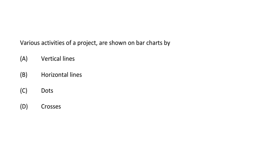Next question: various activities of a project are shown in a bar chart by — option A vertical lines, option B horizontal lines, option C dots, option D crosses. The correct answer is option B, horizontal lines.